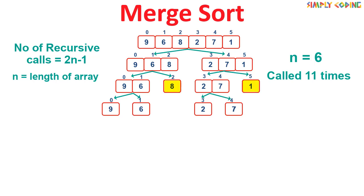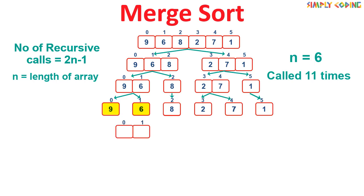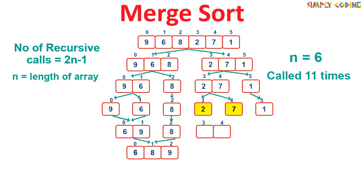Now let's see the merge process. Since [8] and [1] are already single-element arrays and sorted, we copy them down to showcase the merge. The merge process takes two sorted sub-arrays and merges them back in sorted order. Importantly, you merge back in the same sequence as you split — you cannot start merging 6 with 8; you must merge 9 and 6 first. So 9 is compared with 6; since 6 is smaller, 6 is placed first, then 9. Next, [6, 9] is merged with [8]: 6 is compared with 8, 6 is smaller so it stays first; then 9 is compared with 8, 8 is smaller so 8 is placed next, then 9.